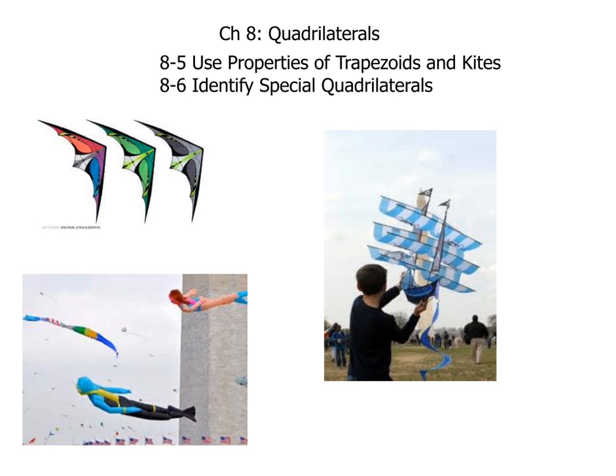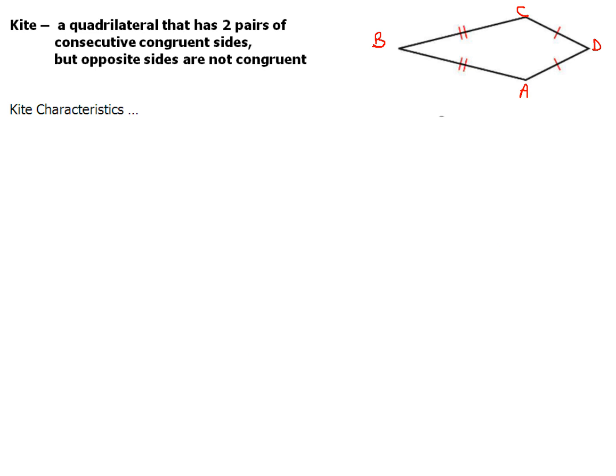But I digress. Let us get on and talk about the characteristics of the kite. All right, so we've got our kite. Now, a kite is just a quadrilateral that has two pairs of consecutive congruent sides, but the opposite sides are not congruent.